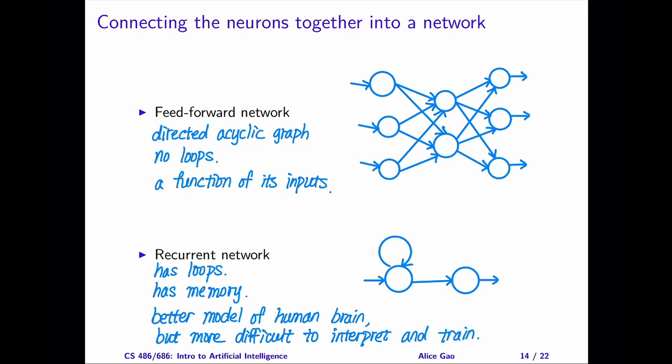Similarly, a recurrent network has memory. The complication is that the output value is no longer a function of its inputs. The output may also depend on what the network remembers about the historical inputs. Historical inputs determine the current state, which influences the output.